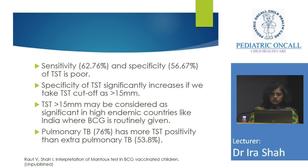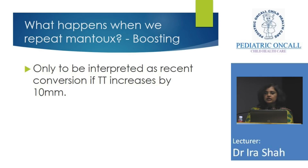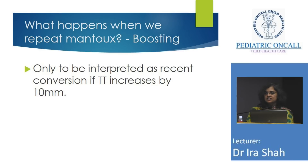Pulmonary TB had more TST positives compared to extra-pulmonary TB. If you repeat a MANTU after one week, it may boost by one or two millimetres — not more. Conversion means MANTU changed by 10 millimetres — for example, from 5 to 15 — which tells you there was an active tuberculous exposure.